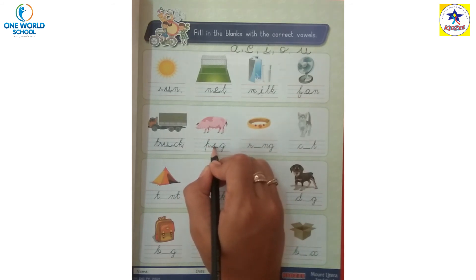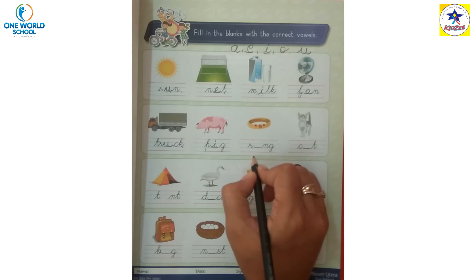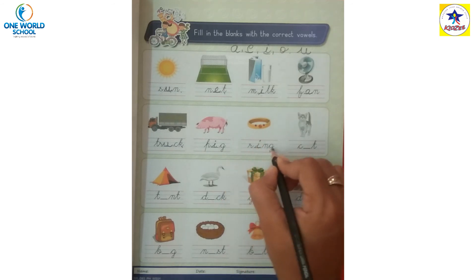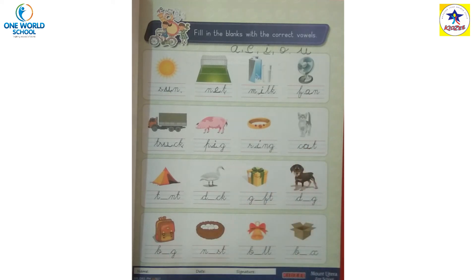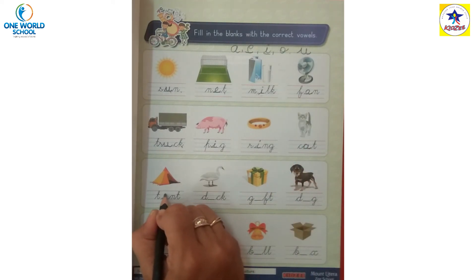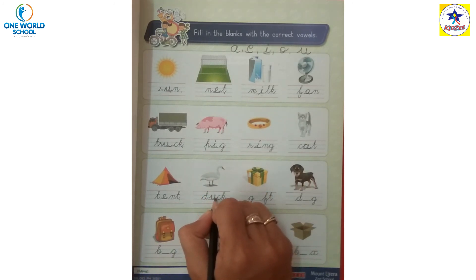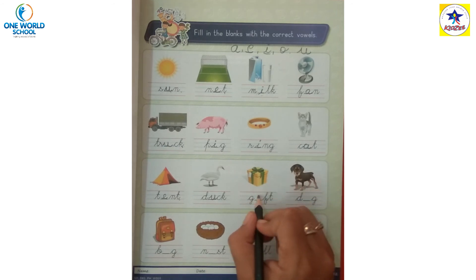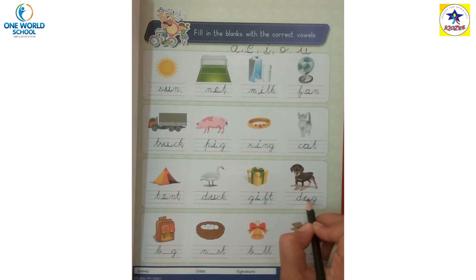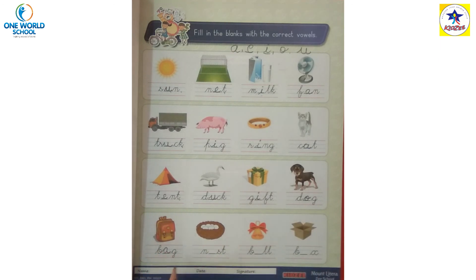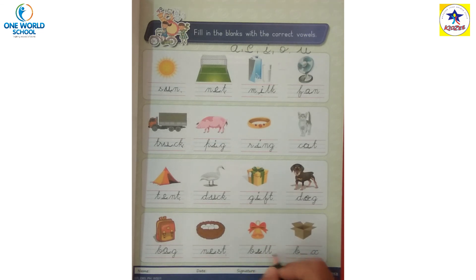Pig - P, I, G. Pig. Ring. Cat. T, E, N, T. D, U, C, K - duck. G, I, F, T - gift. D, O, G - dog. B, A, G - bag. N, E, S, T - nest. B, E, L, L - bell. B, O, X - box.